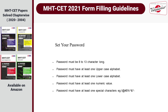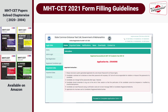Now you need to set your password. The password must be 8 to 13 characters long and must have at least one uppercase alphabet, one lowercase alphabet, at least one numeric value, and one special character. Once you set your password and proceed, a unique application number is generated. You will also receive an SMS mentioning this application number. Please note down the system-generated application number and the password you have chosen, as they are required for all further logins.